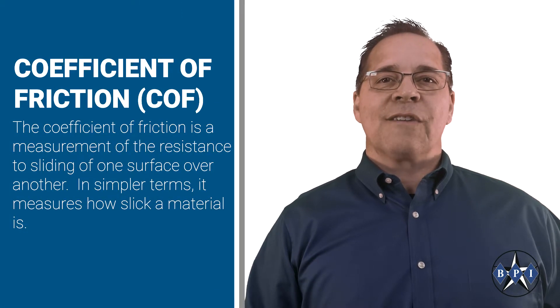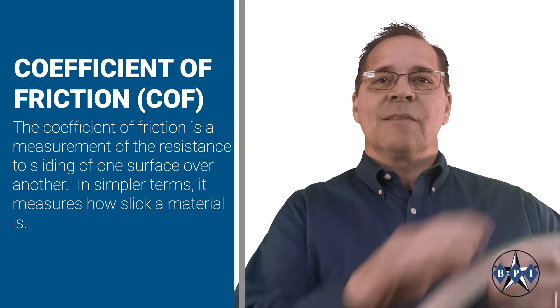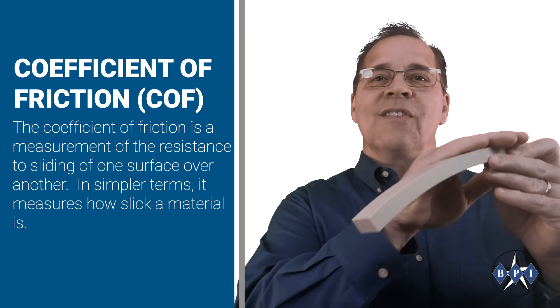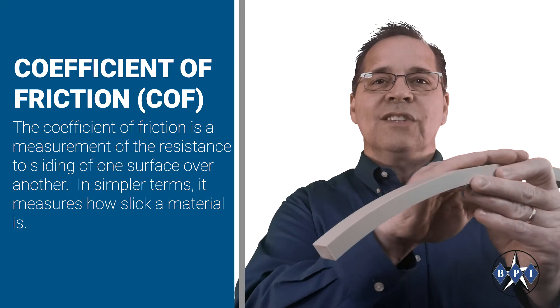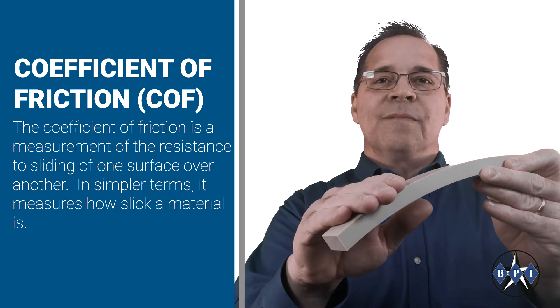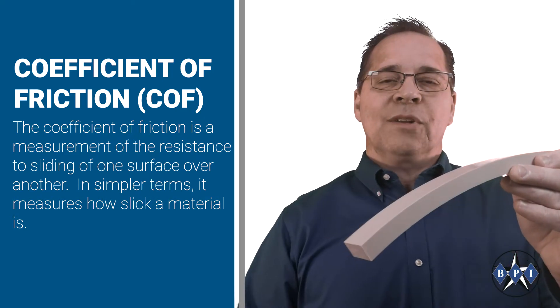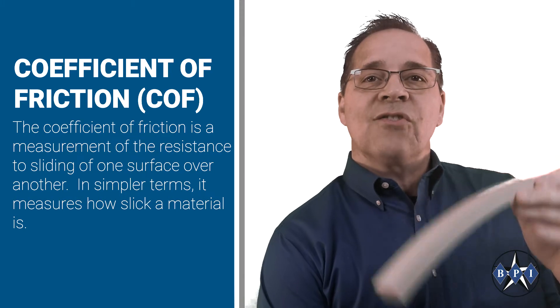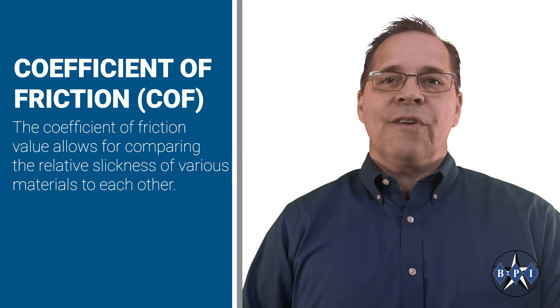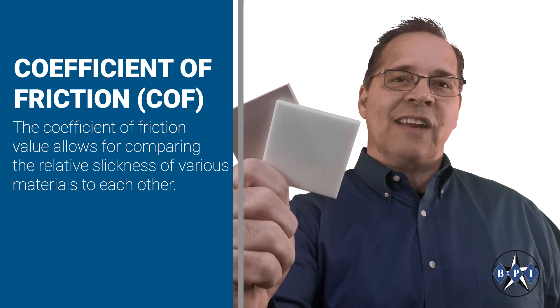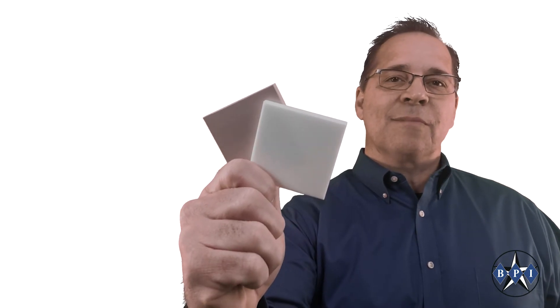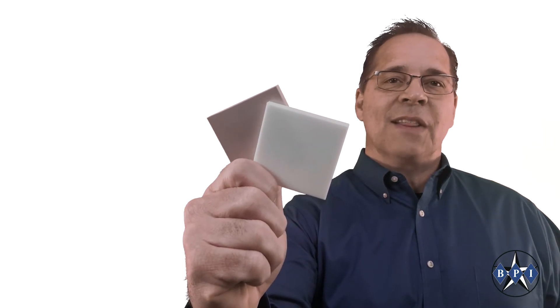The coefficient of friction is a measurement of the resistance to sliding of one surface over another. In simpler terms, it measures how slick a material is. The coefficient of friction value allows for comparing the relative slickness of various materials to each other.